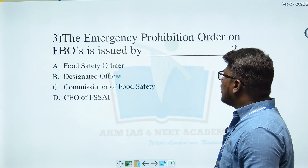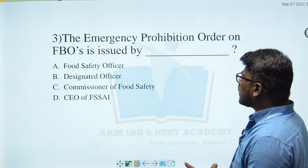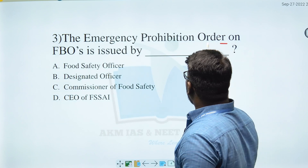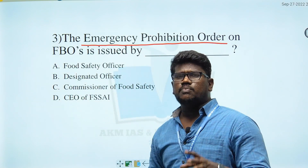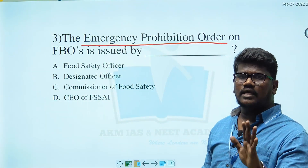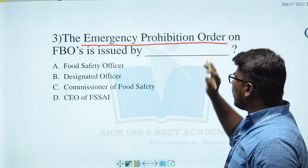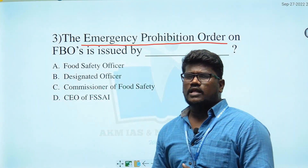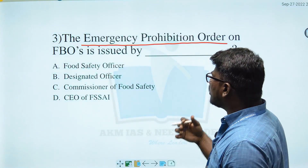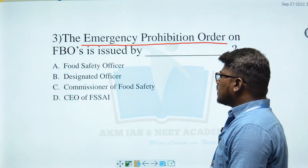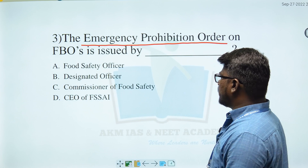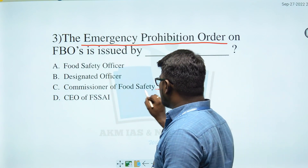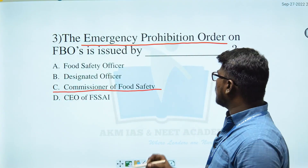Moving to the third question: The emergency prohibition order on the FBOs is issued by — Options: A) Food Business Operator, B) Food Safety Officer, C) Designated Officer, D) Commissioner of Food Safety, E) CEO of FSSAI. The right answer is C: Commissioner of Food Safety — that is the emergency prohibition order.